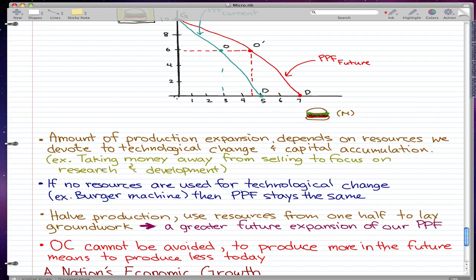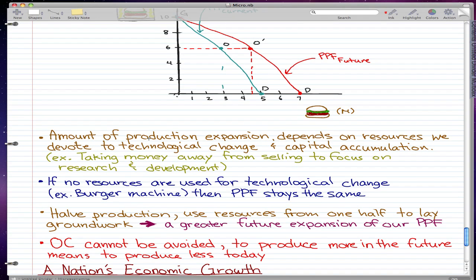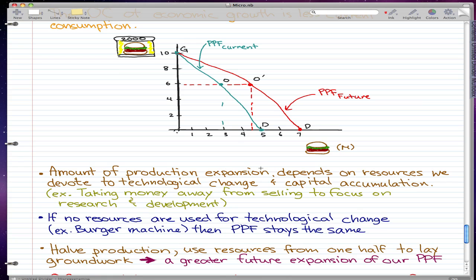The amount of production expansion depends on resources we devote to technological change and capital accumulation. That means taking money away from selling to focus on research and development—splitting up our resources and devoting some to technological change and capital accumulation, putting some of the resources into the future. If we put resources into the future, we can achieve things that we could not achieve otherwise.